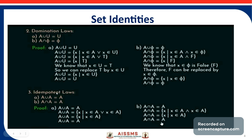The third set identity law is the idempotent laws. The first is A union A equals A, and the second is A intersection A equals A. For the first: A union A is the set of X such that X belongs to A or X belongs to A, which simplifies to X belongs to A, so A union A equals A. For the second: A intersection A is the set of X such that X belongs to A and X belongs to A, which also gives A intersection A equals A. These are the idempotent laws.